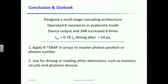In conclusion, we designed a multi-stage cascading architecture. We successfully operated eight nanowires in avalanche mode. The device output and the signal-to-noise ratio are increased by eight times. The avalanche current is 0.78 IC, while the timing jitter is only 54 picoseconds.